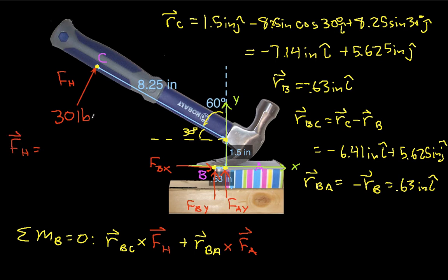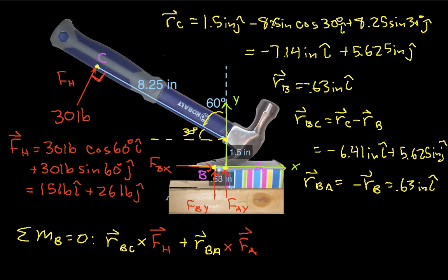FH is going to be, again, we're assuming we have a right angle here. So it's going to be 30 pounds cosine 60 degrees i-hat plus 30 pounds sine 60 degrees j-hat. And this turns out to be 15 pounds i-hat plus 26 pounds j-hat. Okay, so we worked this all out.